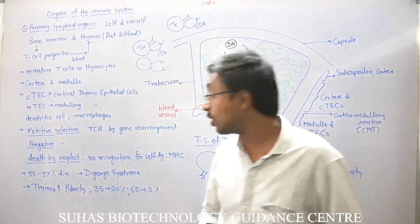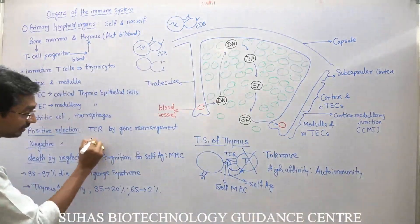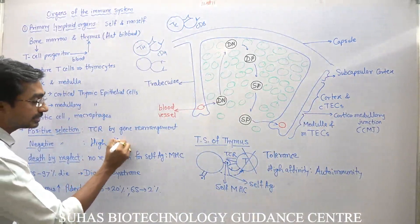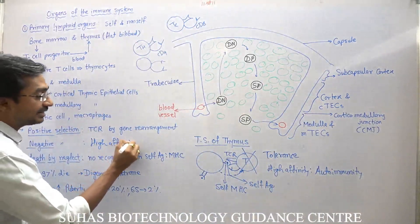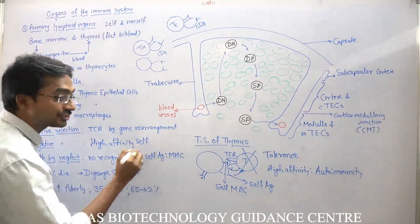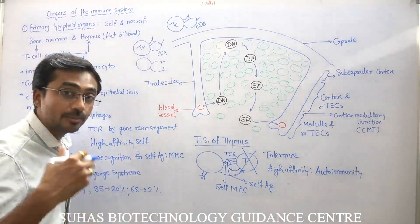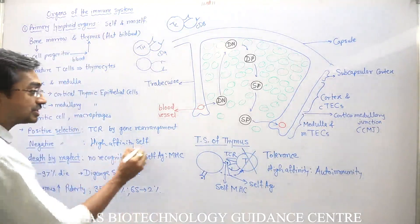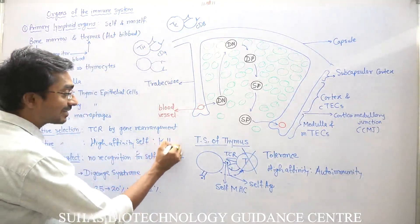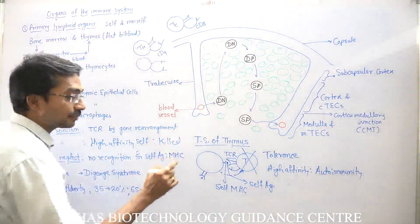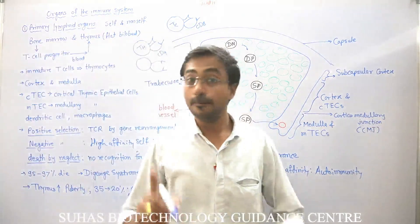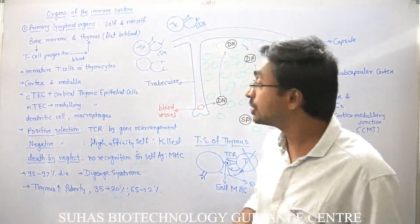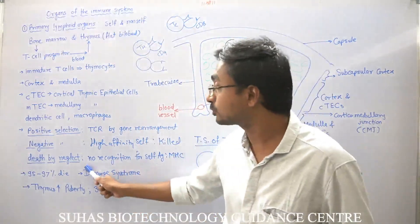Those T-lymphocytes which show high affinity for self antigen can pose the problem of autoimmunity in the body, and that's why they are immediately killed — this type of selection is called negative selection. But there are also many T-lymphocytes that fall into another category.